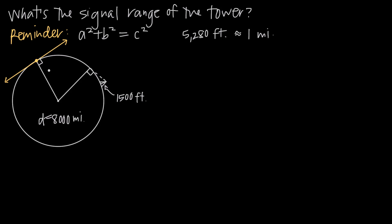So if you're ever shown a diagram like this and you have the radius and a line that intersects the radius here with a 90-degree angle — indicating that this line and the radius are perpendicular — then you know that this line is tangent to the circle.